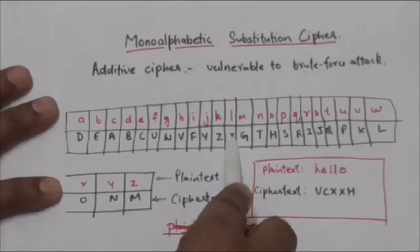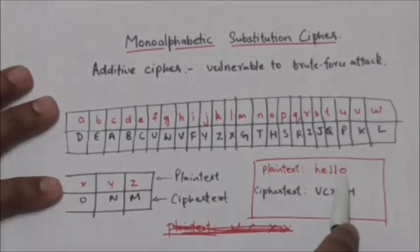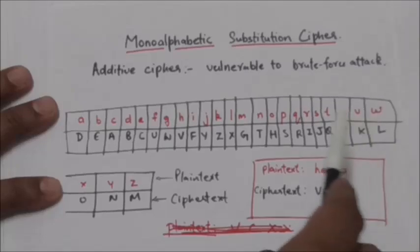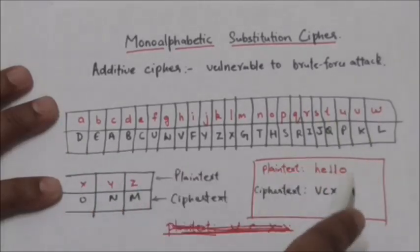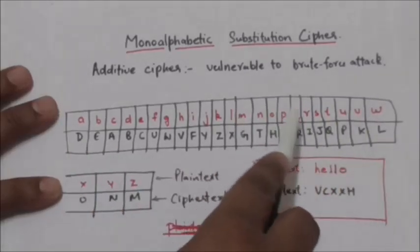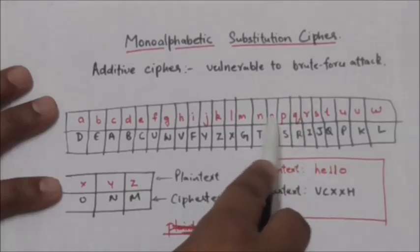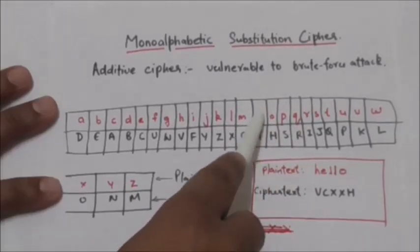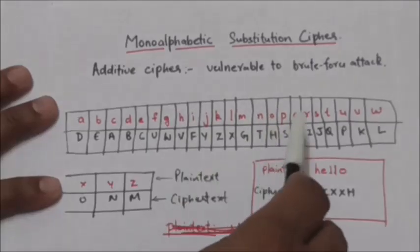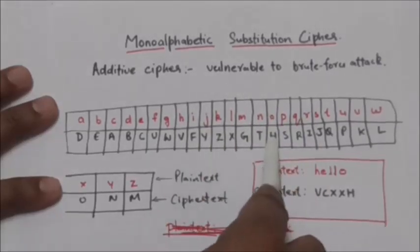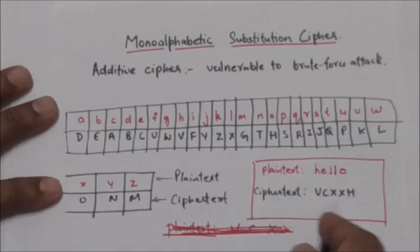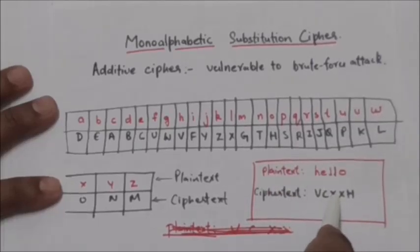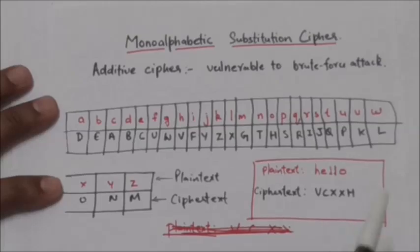The next character is O. From the table, plaintext character O will be encrypted to ciphertext character H. So the full ciphertext corresponding to the plaintext H-E-L-L-O is V-C-X-X-H.